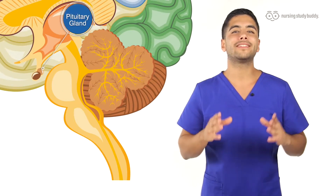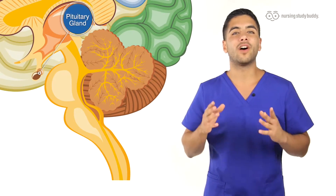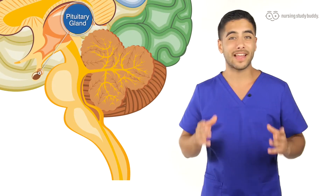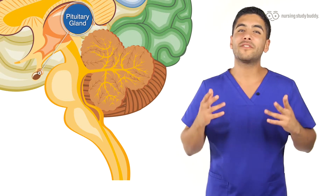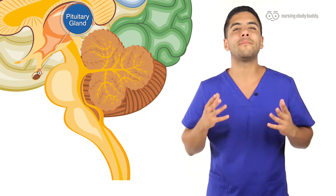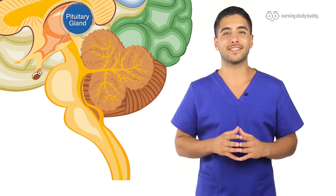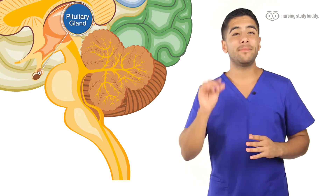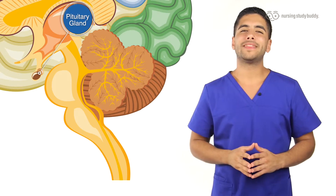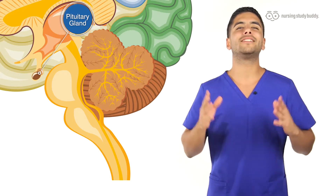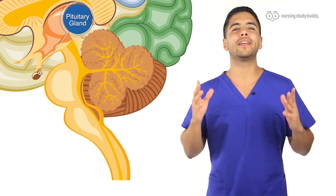We're going to start with general information about the pituitary gland. The pituitary gland is a pea-sized gland that regulates the activity of other endocrine glands. This is the reason it's commonly referred to as the master gland. The pituitary gland may be small, but that doesn't mean that it's not extremely important.